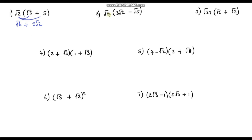Question 2: we're going to multiply √5 by everything in the brackets. √5 times 3√2 — doing the numbers first gives 3, and √5 times √2 is √10, so that's 3√10. Then minus: √5 times √5 is just 5. So the answer is 3√10 minus 5.